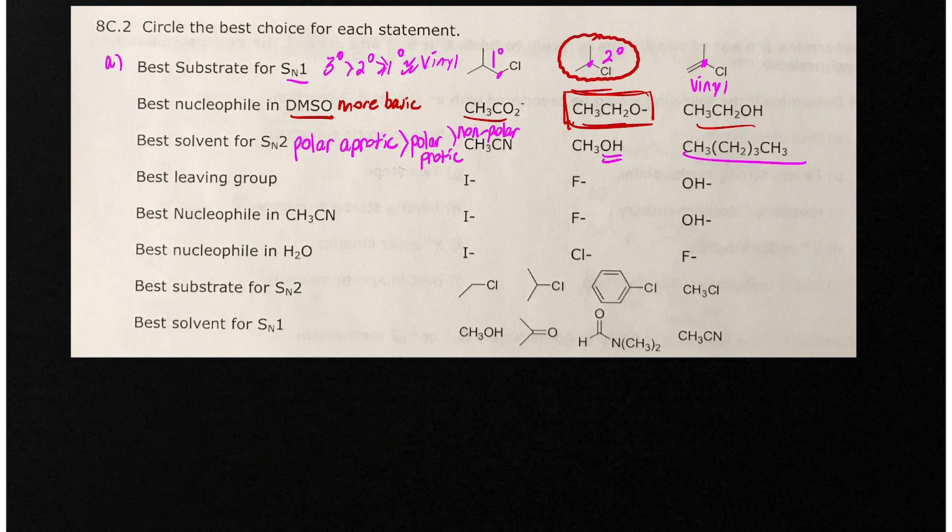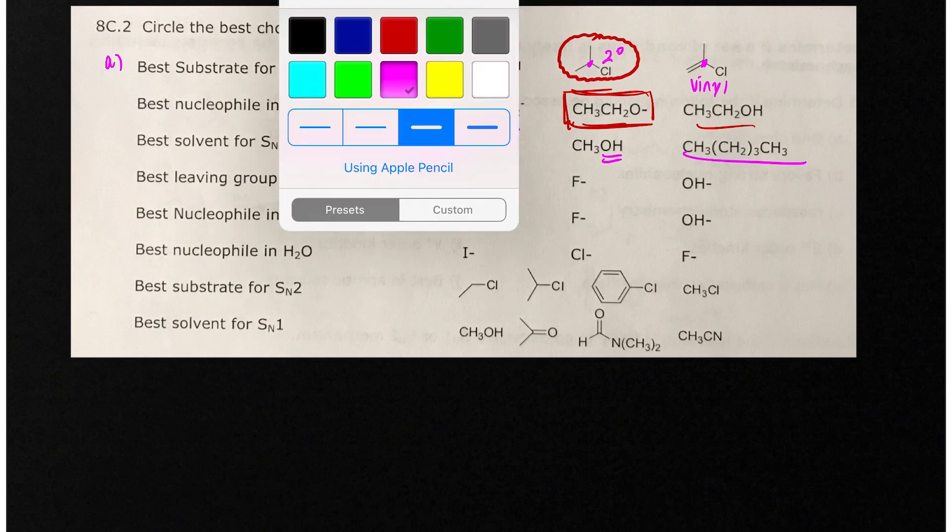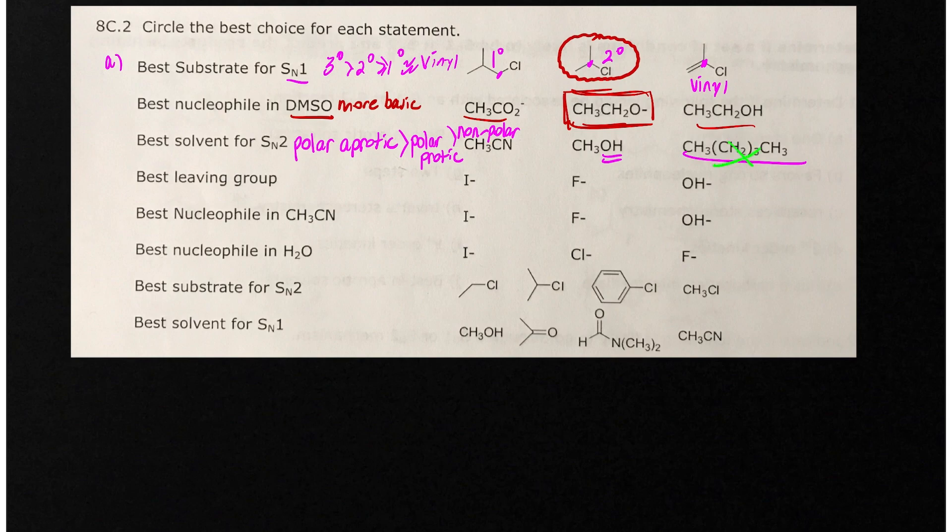This guy on the right is, cross it out in green, is an alkane. It's not even polar. This guy in the middle, methanol, is a polar protic solvent. The polar aprotic solvent is acetonitrile. So this is polar, and it lacks OH or NH bonds.